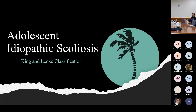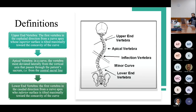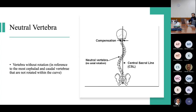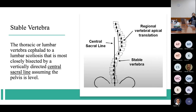Before discussing classification, a few key definitions: the upper end vertebra is the most cephalad vertebra with its superior surface most tilted toward the concavity of the curve; the lower end vertebra is the opposite. The apical vertebra is the most laterally deviated vertebra from the central sacral vertical line. The neutral vertebra is the vertebra without rotation, and the stable vertebra is the last vertebra most closely bisected by the central sacral vertical line.